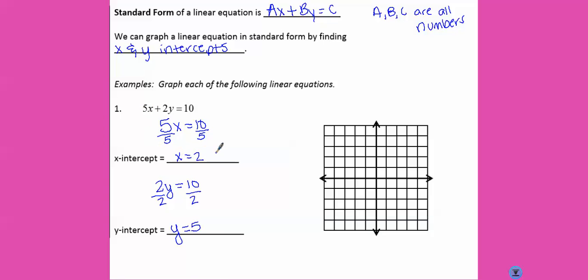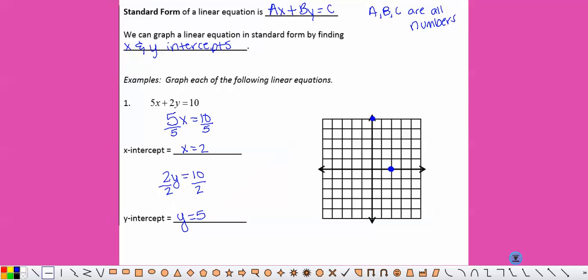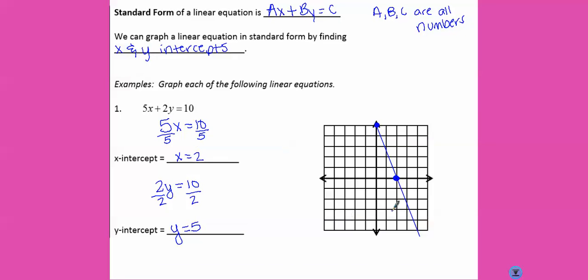So now, we go to where x equals 2, make a dot. Go to where y equals 5, make a dot. And then take our ruler. Connect our dots. And put arrows on the end.